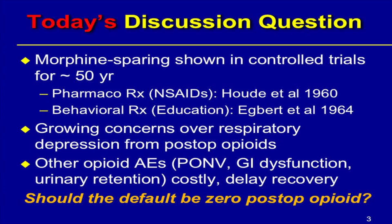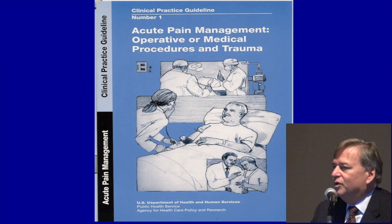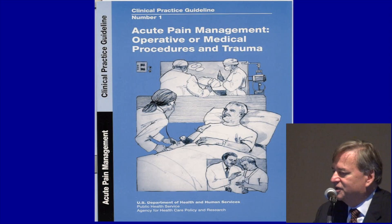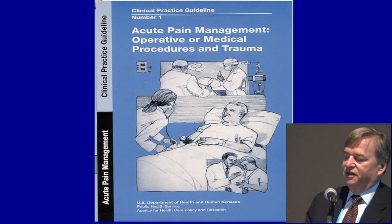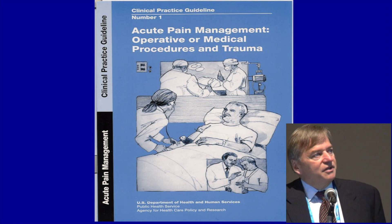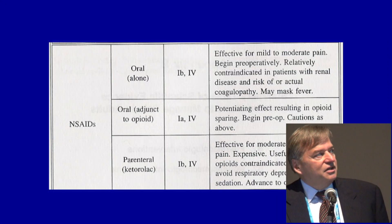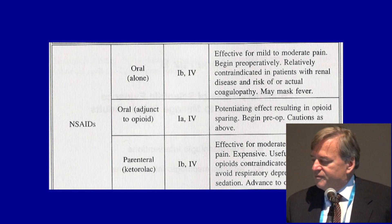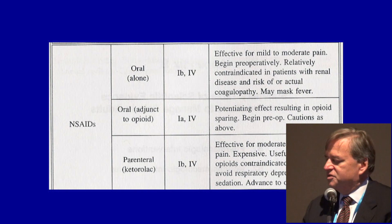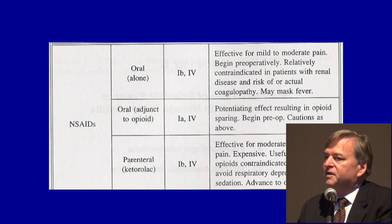I posed the question: should the default be zero post-op opioids? Going back 25 years ago to the first federal guideline, when we were involved with these guidelines, this was also on the agenda. In our NSAID case, there was a potentiating effect resulting in opioid sparing. So opioid sparing and reduction was very much on the scene.